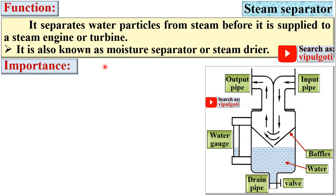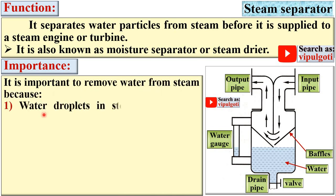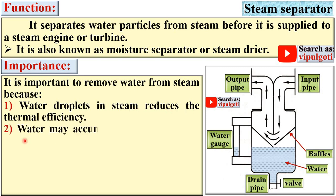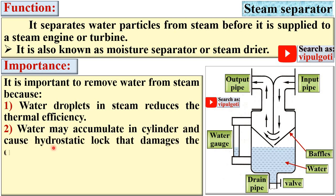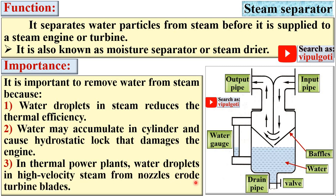Importance of the steam separator: It is important to remove water from the steam because water droplets in steam reduce the thermal efficiency. Water may accumulate in the cylinder and cause hydrostatic lock that damages the engine. In thermal power plants, water droplets in high velocity steam from the nozzles also erode turbine blades.